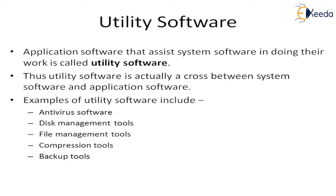The third type is utility software. Application software that assists system software in doing its work is called utility software — it is a supporting software to the application software. Utility software is actually a cross between system software and application software. Examples of utility software include antivirus software, disk management tools, file management tools, compilation tools, and backup tools.